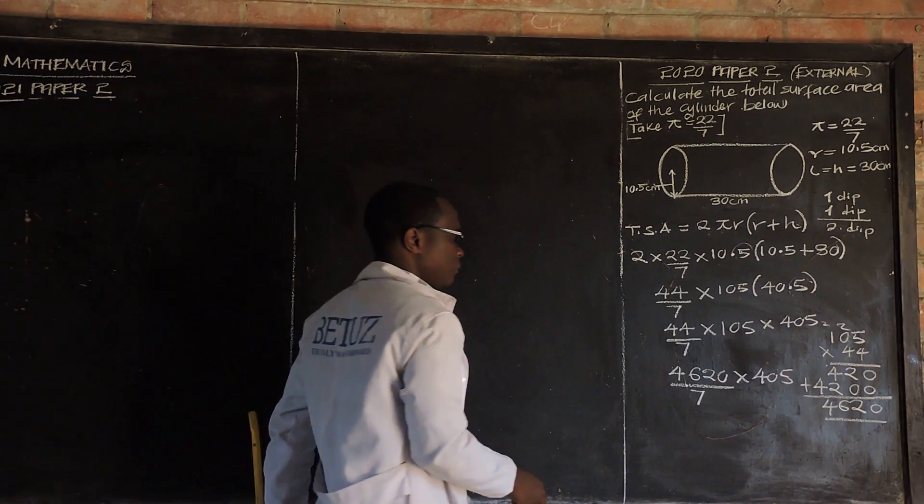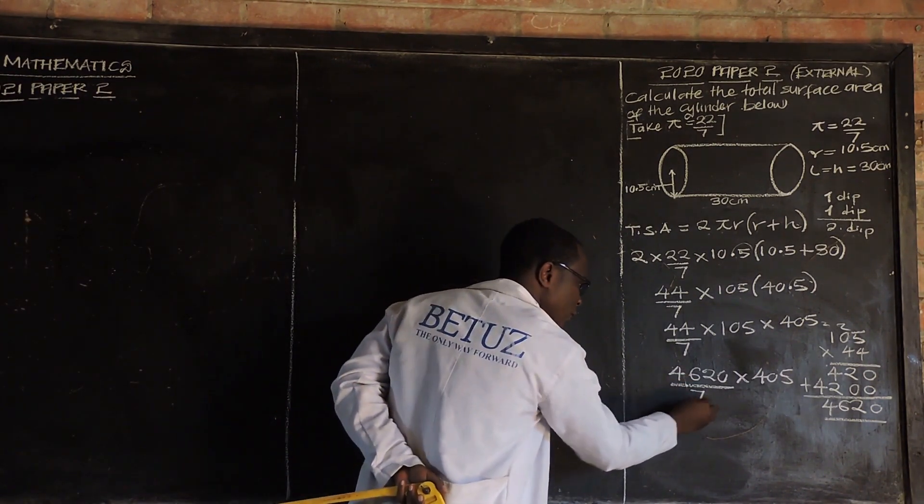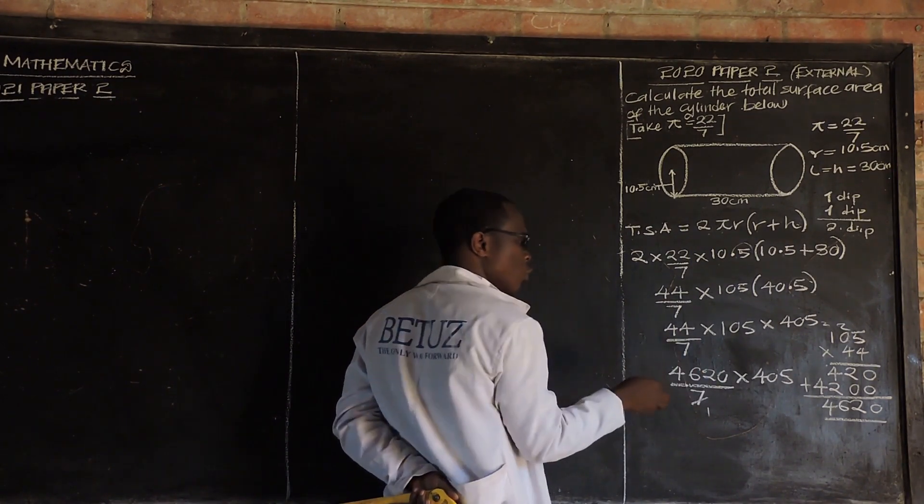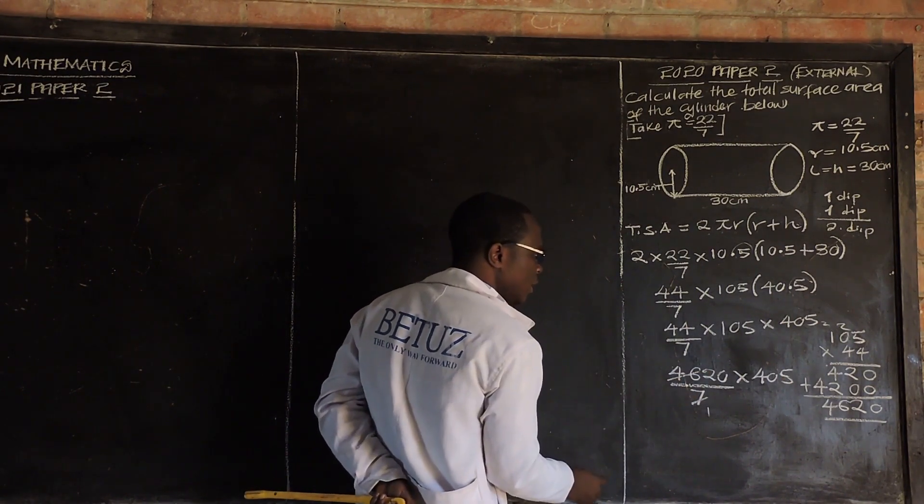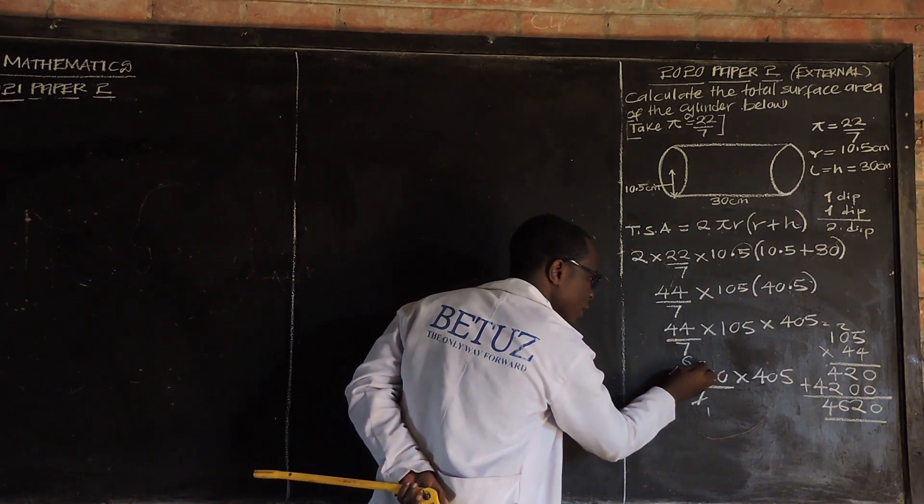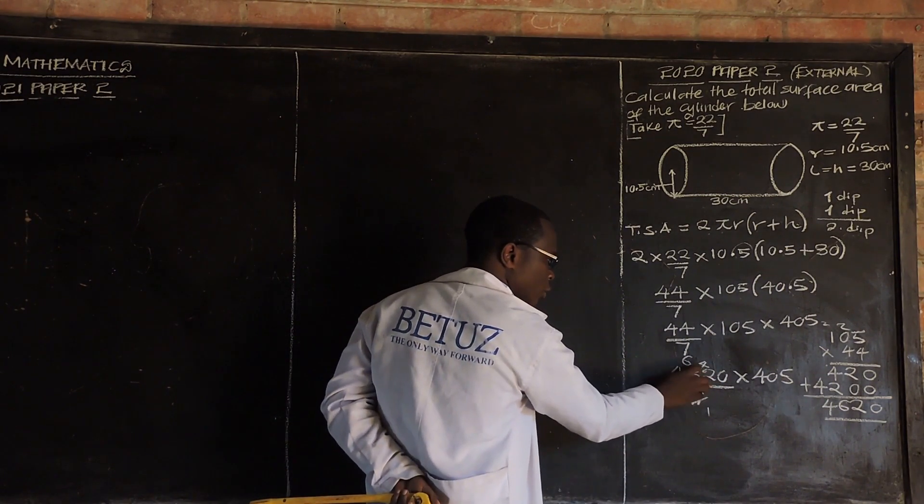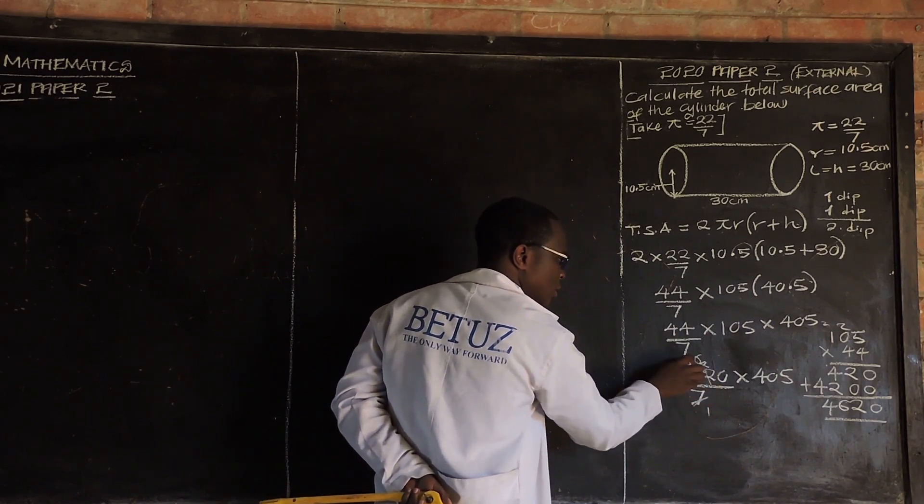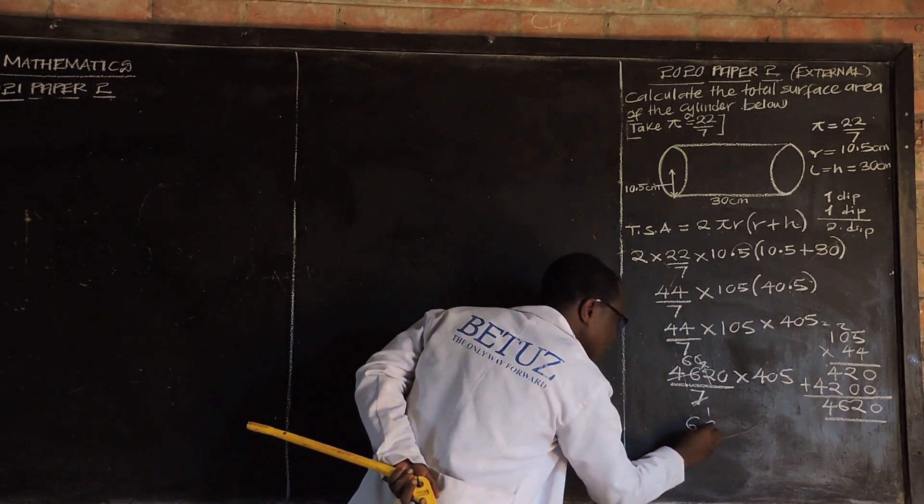4,620 divided by 7, then multiplied by 405. Let's find the quotient of this. So, 7 into 46 is what? It's 6 with remainder 4. Then, 7 into 42 is 6. So, we have 666.